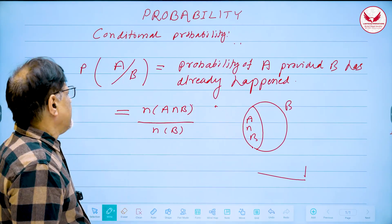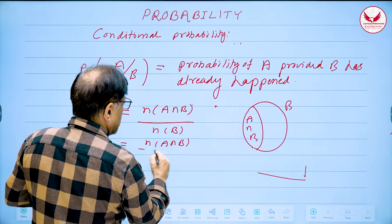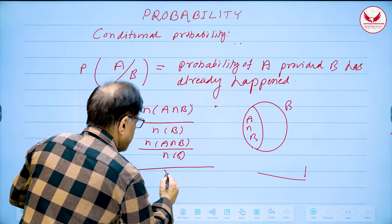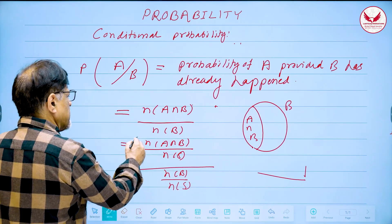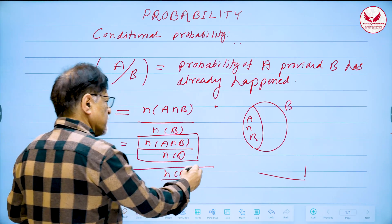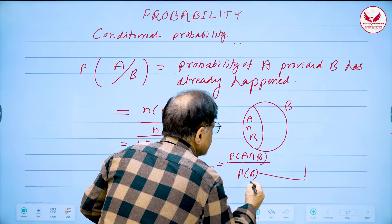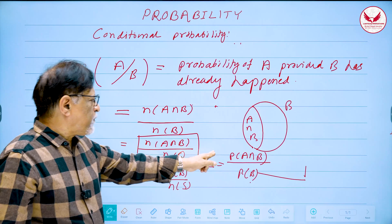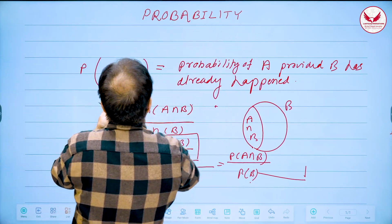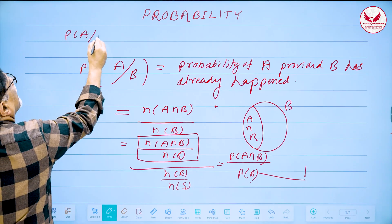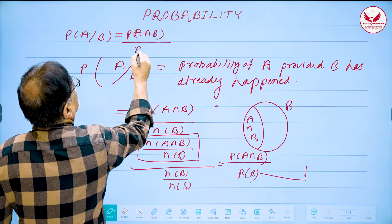Since B is now the sample space, the probability of A occurring is the number of elements in A intersection B divided by the number of elements in B. Dividing numerator and denominator by the total number of elements in the original sample space S, this gives us: P(A|B) = P(A∩B) / P(B).